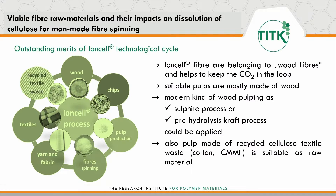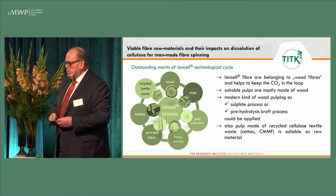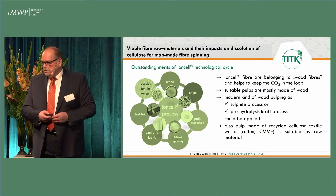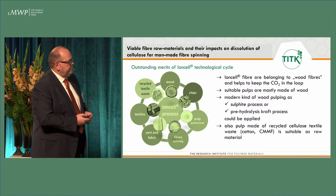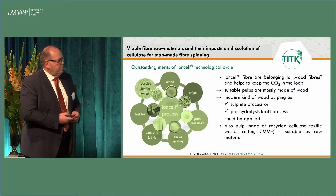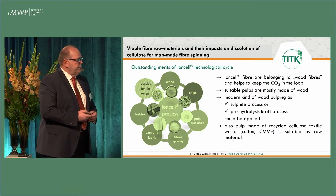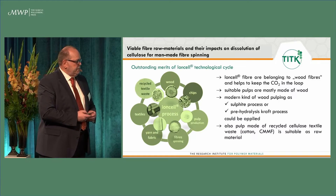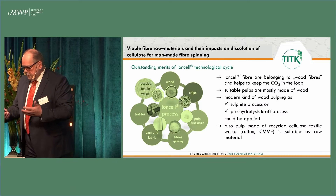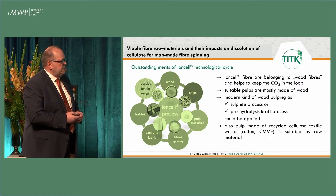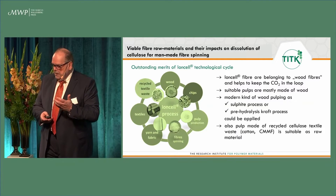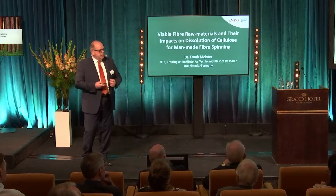Ion fibers belong to wood fibers, and the most important thing — not only is this a very prosperous perspective — this kind of wood fibers also keeps the CO2 in the loop, which is very important today. Suitable pulps, as we have heard, are mostly made of wood, and all kinds of modern wood pulping, sulfide process and a pre-hydrolysis kraft process could be applied. We have also seen that other kinds of material could be used, especially recycled cellulose materials coming from cotton or cellulose man-made fibers, and that is a very huge advantage of this kind of direct dissolution spinning.